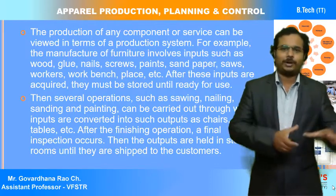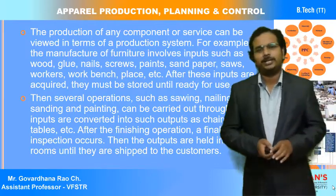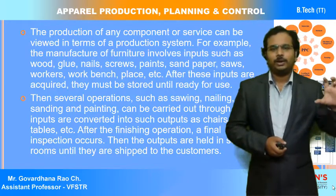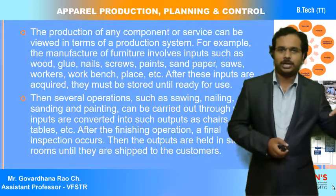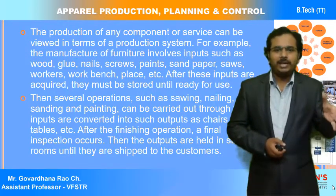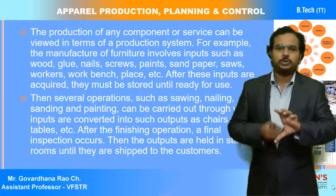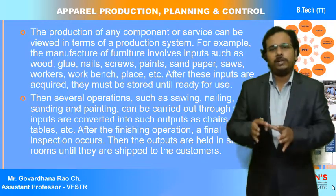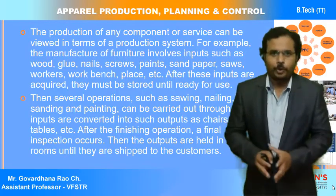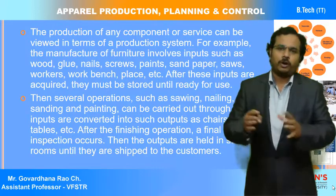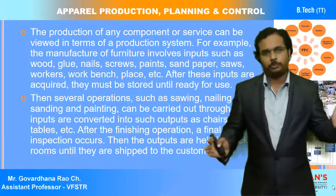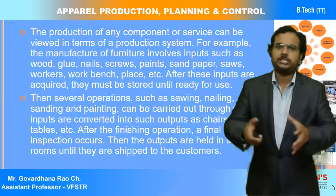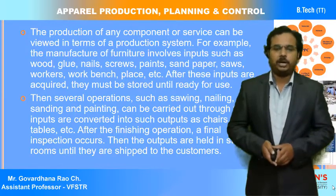The output might be tables or chairs. So in this production system example: inputs are the raw materials like wood, glue, and nails; the process includes sawing, nailing, sanding, and painting — converting inputs to outputs; and the output is the finished furniture. This is a simple example of a production system.